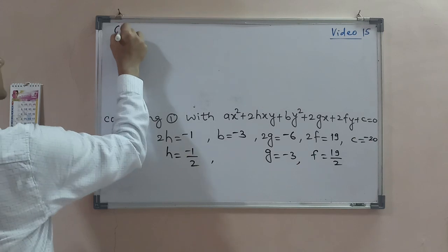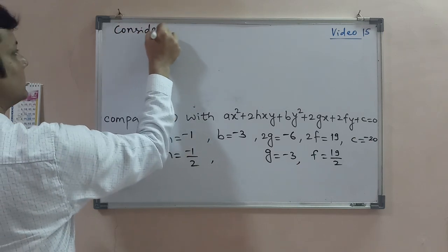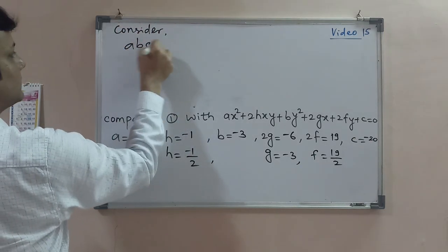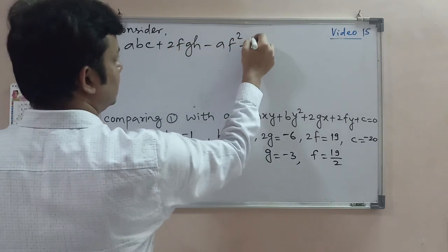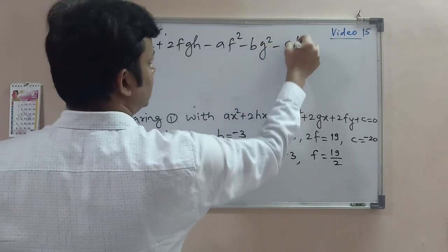The condition is: abc + 2fgh - af² - bg² - ch².